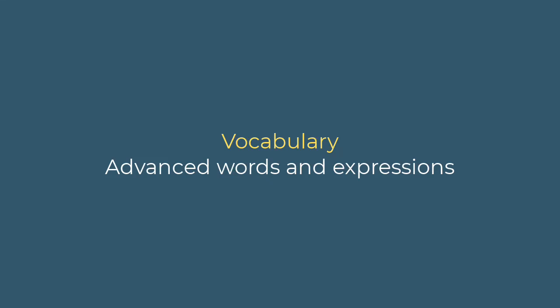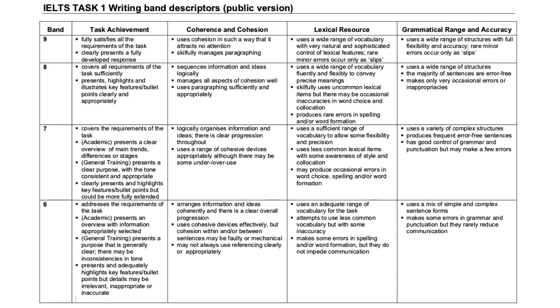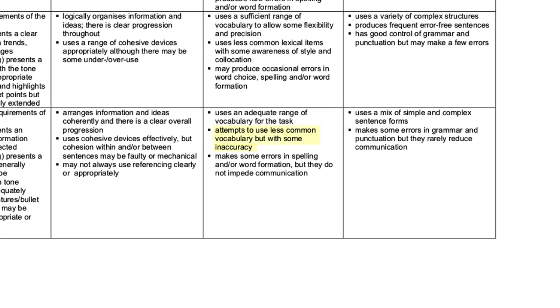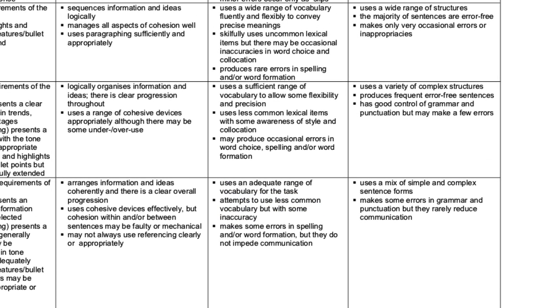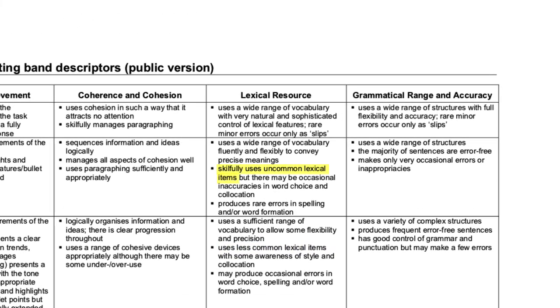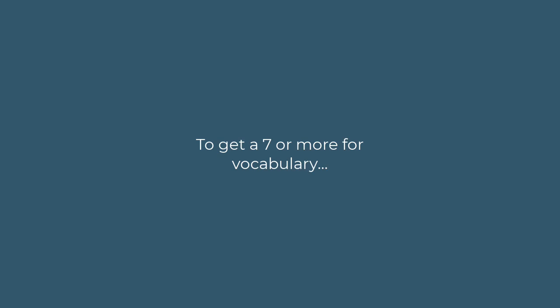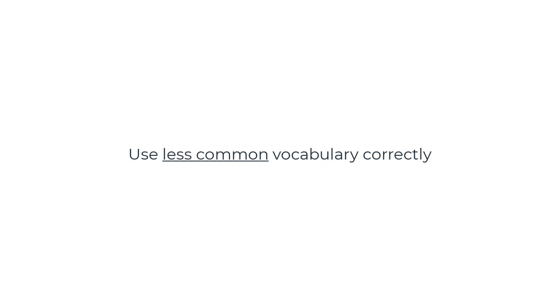In this video I'm going to show you some advanced words and expressions that can help you get a 7 or more for vocabulary in writing task 1. If we look at the examiner criteria under vocabulary, we can see that for a 6 it says attempts to use less common vocabulary but with some inaccuracy. For a 7 we have uses less common lexical items, and for an 8 it says skillfully uses uncommon lexical items. So to get a 7 or more for vocabulary, one of the things you need to do is use less common vocabulary correctly.